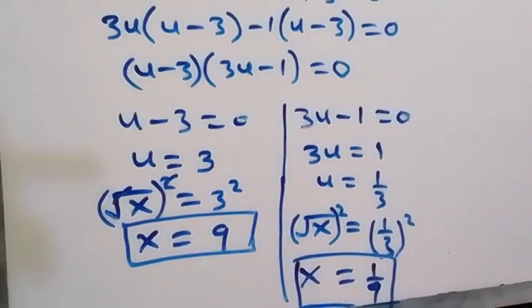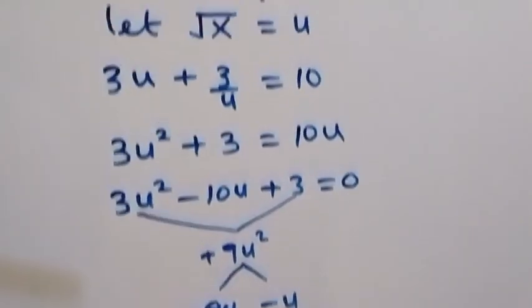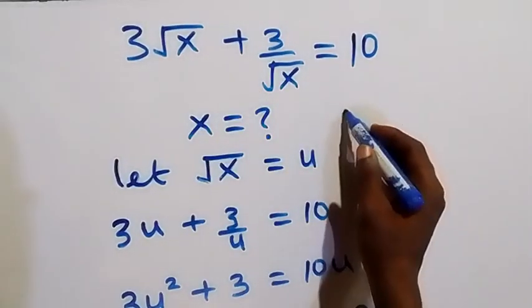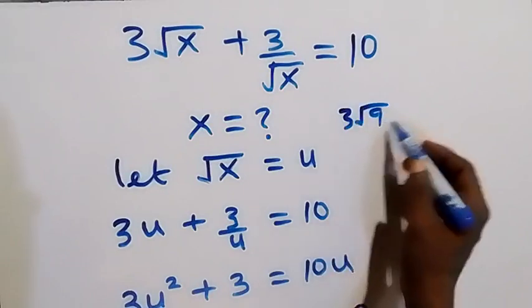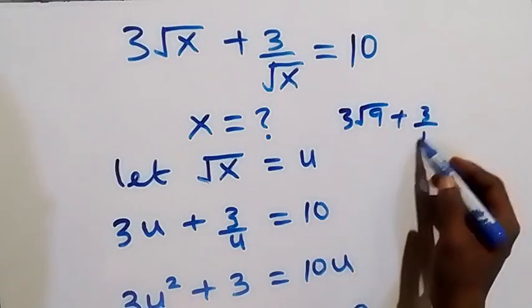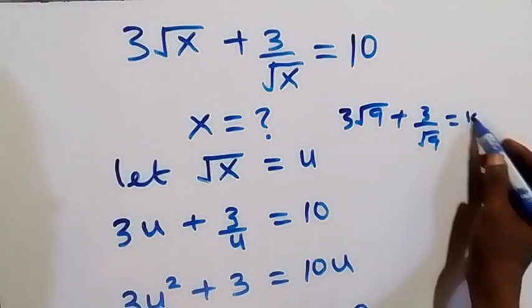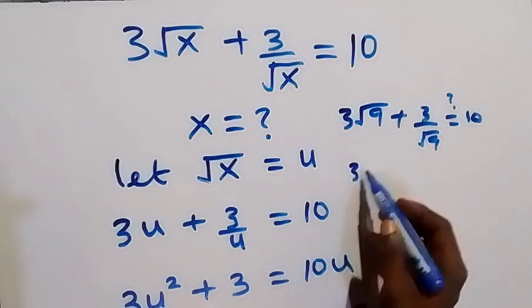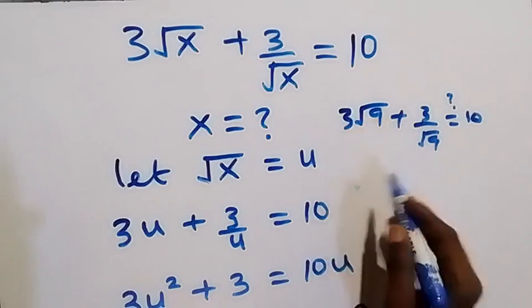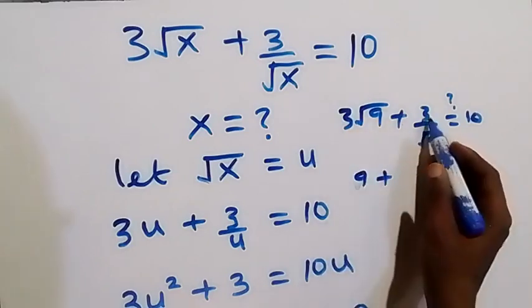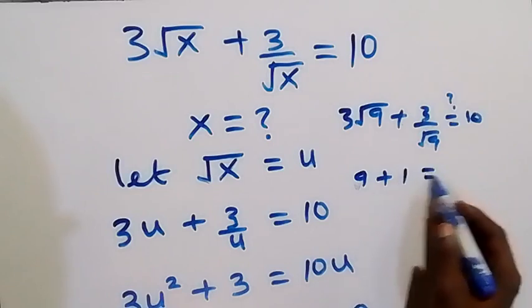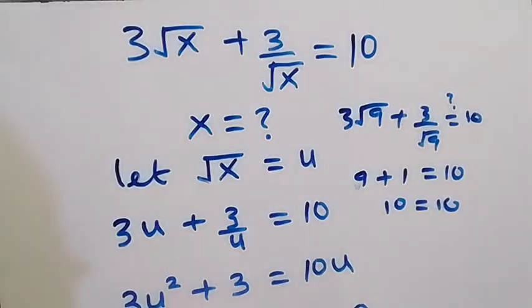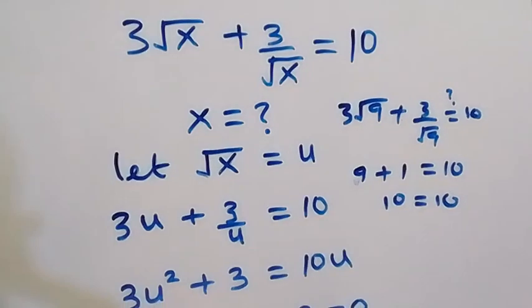We can verify by checking x = 9: substituting gives 3√9 + 3/√9 = 3×3 + 3/3 = 9 + 1 = 10. This equals 10, confirming x = 9 is correct.